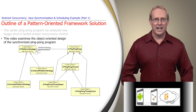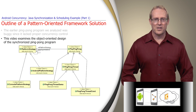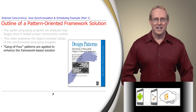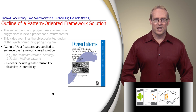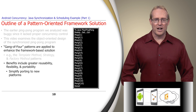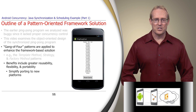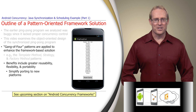In addition to outlining the object-oriented design of this synchronized ping pong program, this part shows how the application of Gang-of-Four patterns — such as template method, strategy, and factory method — provide several benefits. In particular, these patterns make both the framework and the resulting ping pong program more reusable, flexible, and portable. Although we focus on a Java console application, this framework makes it easy to port our solution to Android after we discuss its user interface threading model later in this section.